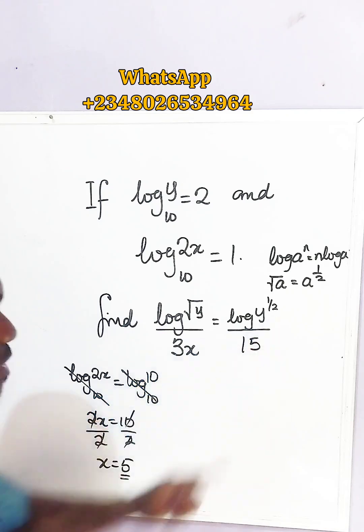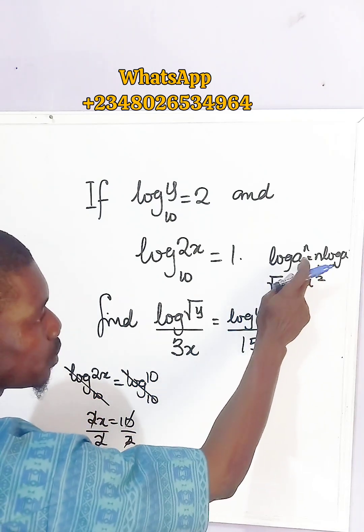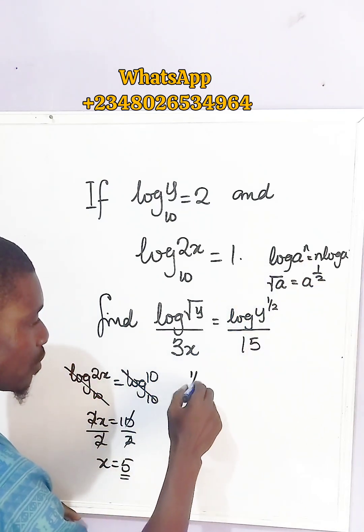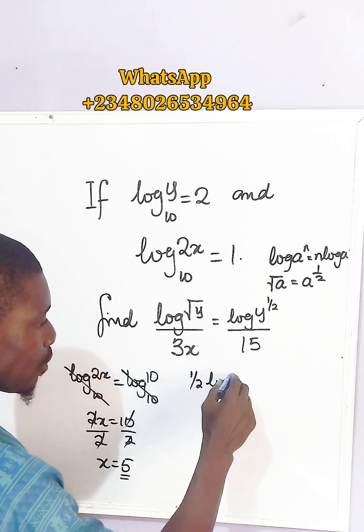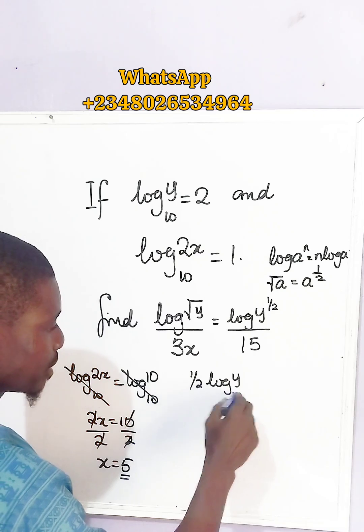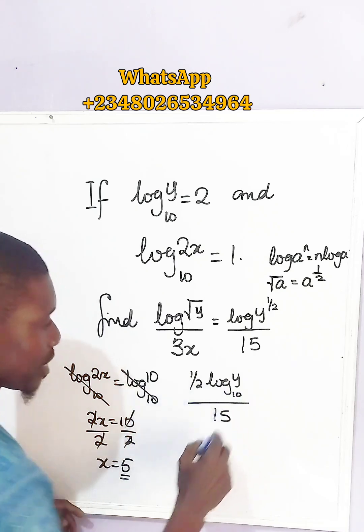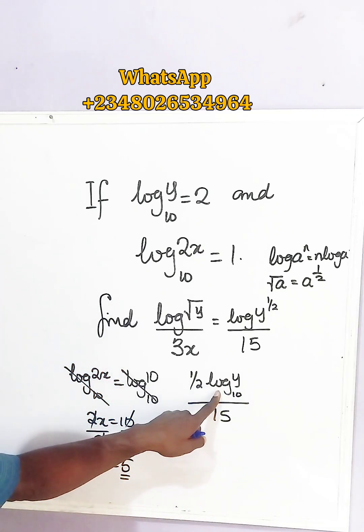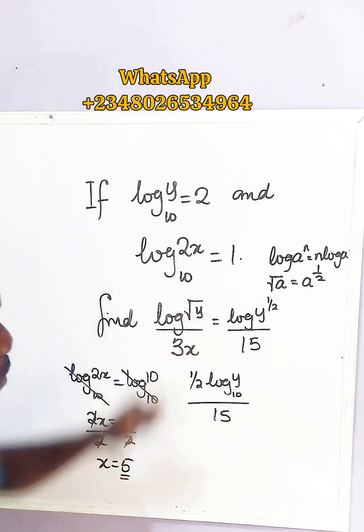However, we are yet to find this. So applying this rule here, we get 1/2 log y base 10, all over 15. And take note, our log y base 10 is 2.